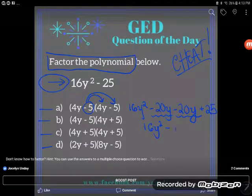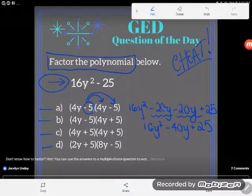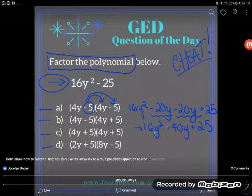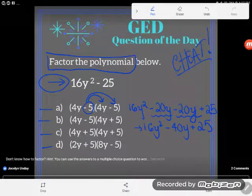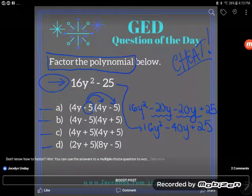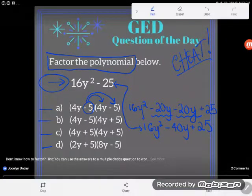Again, if you're not understanding what I'm talking about, the likelihood is that you need to go back and check out the concept of multiplying binomials. But I add together these two like terms in the middle, and this is the expression I get: 16y squared minus 40y plus 25. Does that match this expression? It sure doesn't. This is not a factored form of the other expression. So I'm going to rule out A.